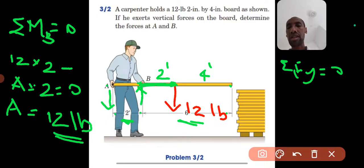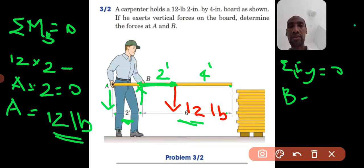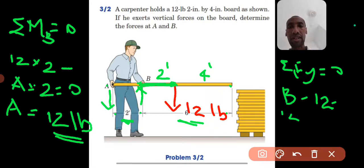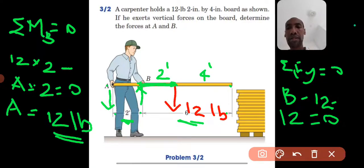Applying summation of forces in Y equal to zero: force at B is upward, force at A is downward (12 lb), and the weight is downward (12 lb). So: B minus 12 minus 12 equals zero, which gives B equals 24 pounds upward.